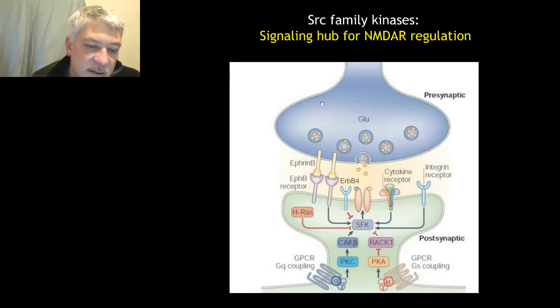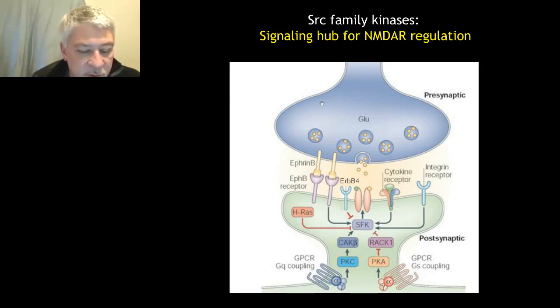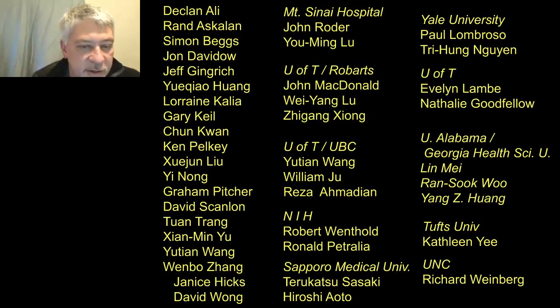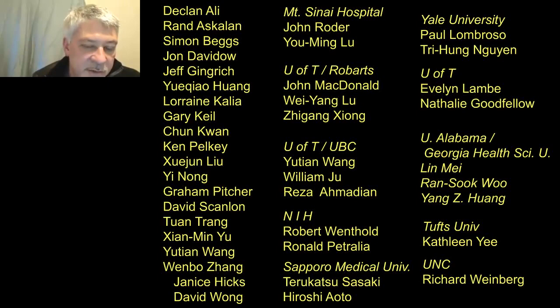In summary: Src family kinases — in particular Src and Fyn — are important regulators of NMDA receptor function, and these kinases themselves are regulated by multiple signaling pathways, including ErbB4 signaling and G-protein coupled receptors. Many people from my lab in Toronto and from collaborating labs in Toronto and the United States have been involved in this work.